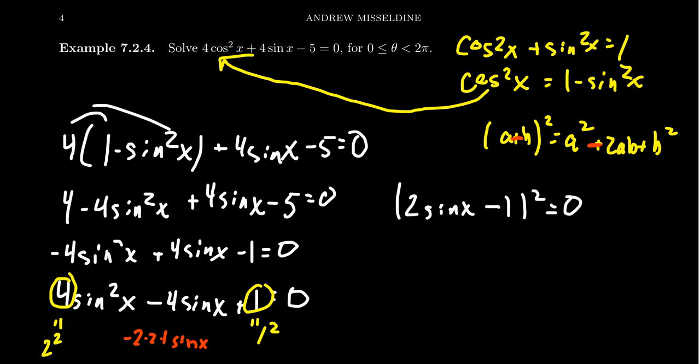If you tried the usual guess-and-check or reverse FOIL method, you'd get (2sinx - 1)(2sinx - 1), which is a repeat. So there's only one case: 2sinx - 1 = 0. Adding 1 to both sides: 2sinx = 1. Dividing by 2, we end up with sinx = 1/2.